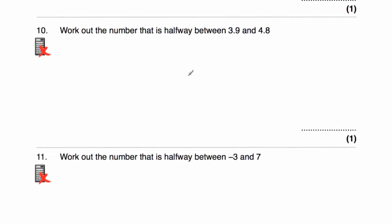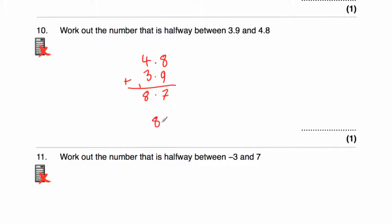Question ten says: work out the number that's halfway between 3.9 and 4.8. So 4.8 plus 3.9: line those up and add them. 8 plus 9 is 17, put our 7 down and carry our 1. 4 plus 3 is 7, plus 1 is 8. So adding these two numbers gives us 8.7. Now we need to do 8.7 divided by 2, using the bus shelter method.